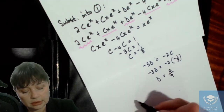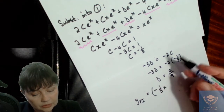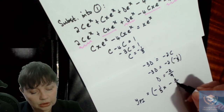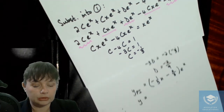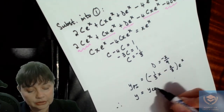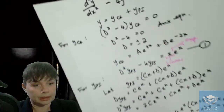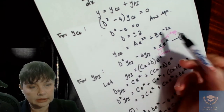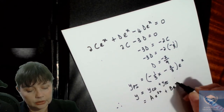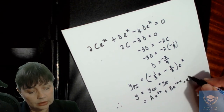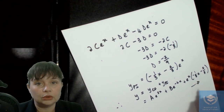So our y particular integral is going to be minus one third x minus two thirds, times e to the x. Then our final answer, as we said, has to be made up of our complementary function plus our particular integral. Our complementary function is Ae to the 2x plus Be to the minus 2x, and we add the particular integral term with e to the x. That over there is your general solution.